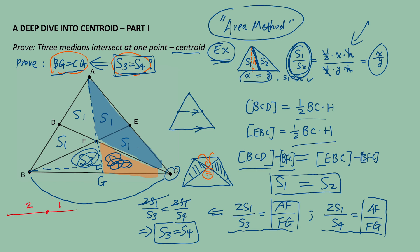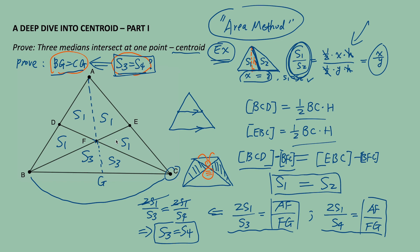In the next class, we are going to show a proof for this 2-to-1 property in two different methods. Before we end today's video, I have a last question for everyone. In this diagram, triangle ABC has 4S1 and 2S3 — is there any relationship between S1 and S3? Are they equal? In the next video we will announce the answer and prove another important property of the centroid: that it divides the median in a ratio of 2 to 1. Thank you for watching. If you have any questions or suggestions, please put them in the comments, and I will see you next time.